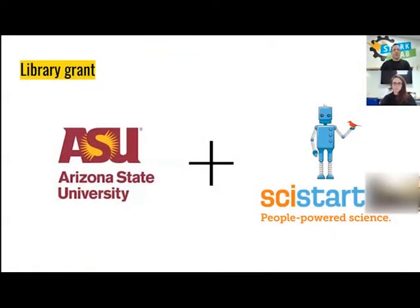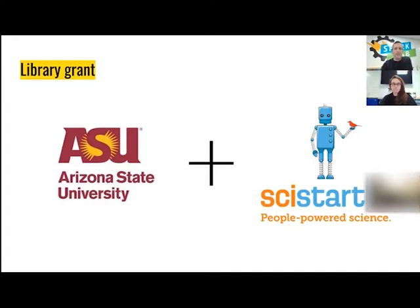What we have done here at the Framingham Public Library is we applied last year for a grant that was a collaboration between Arizona State University and SciStarter — that organization I was just showing you — that hosts different citizen science projects. The grant was to create the citizen science kits we will have here at the library. Anybody will be able to check them out. We have three different kits: one for light in the night sky, one for exploring biodiversity, and one for pollinators.